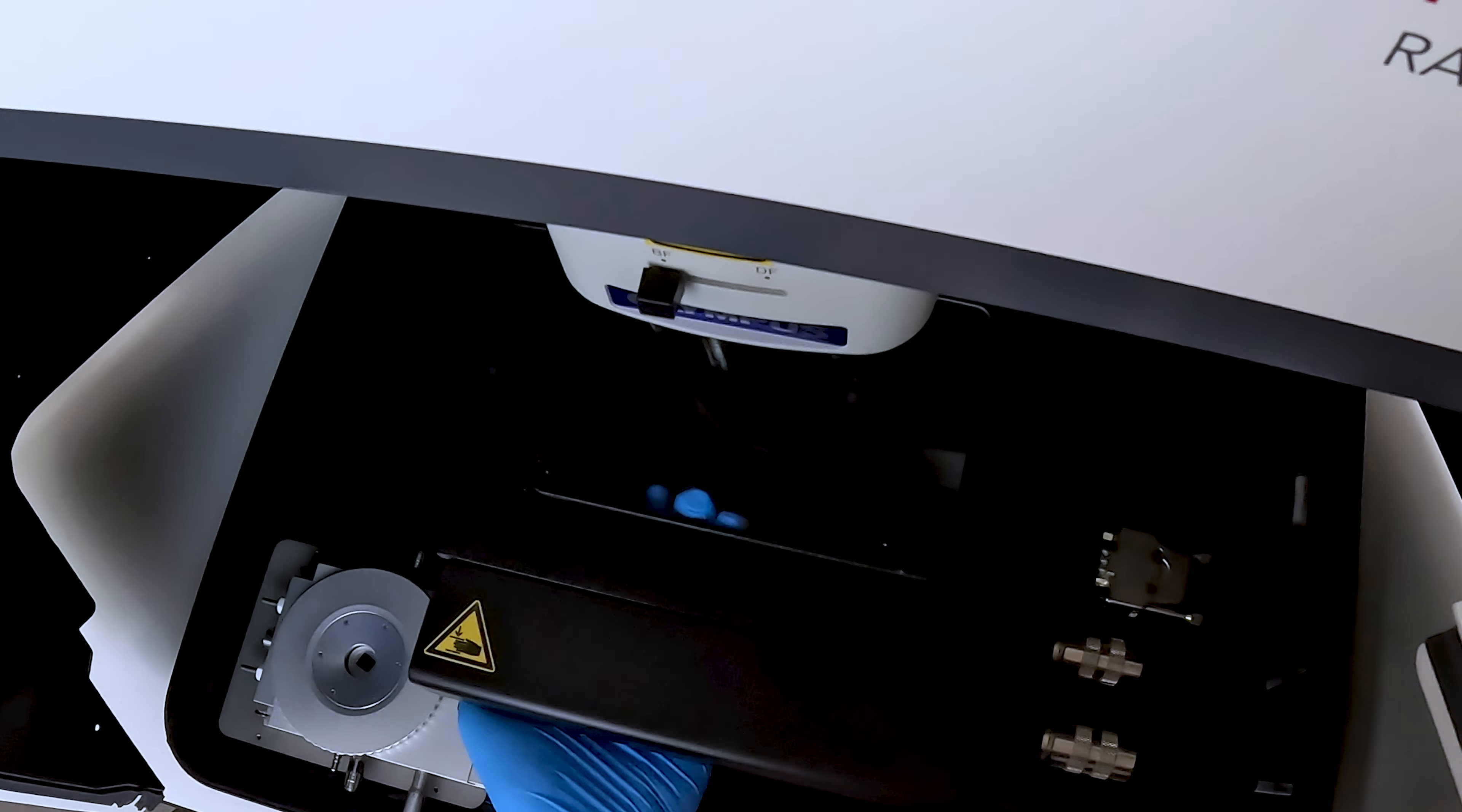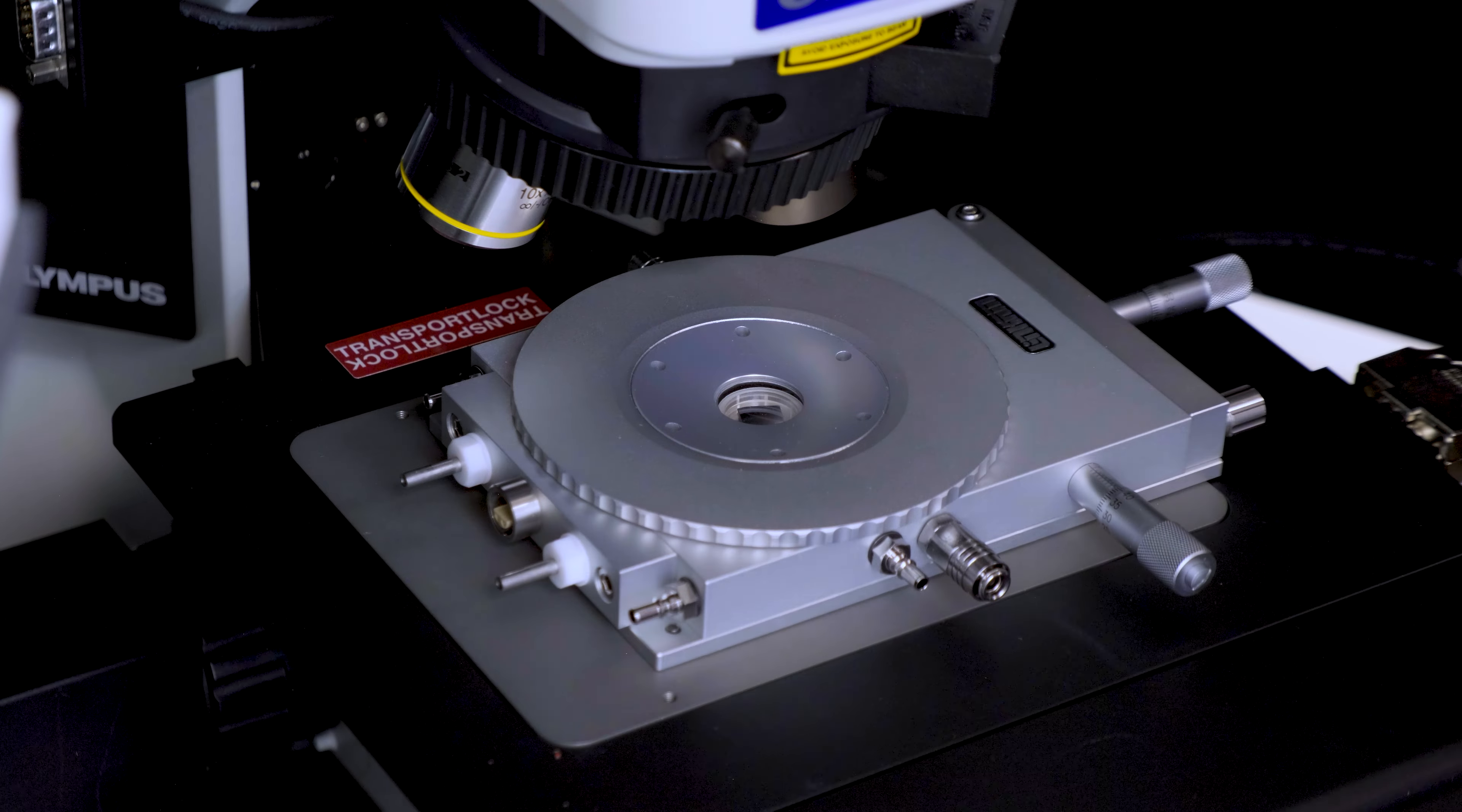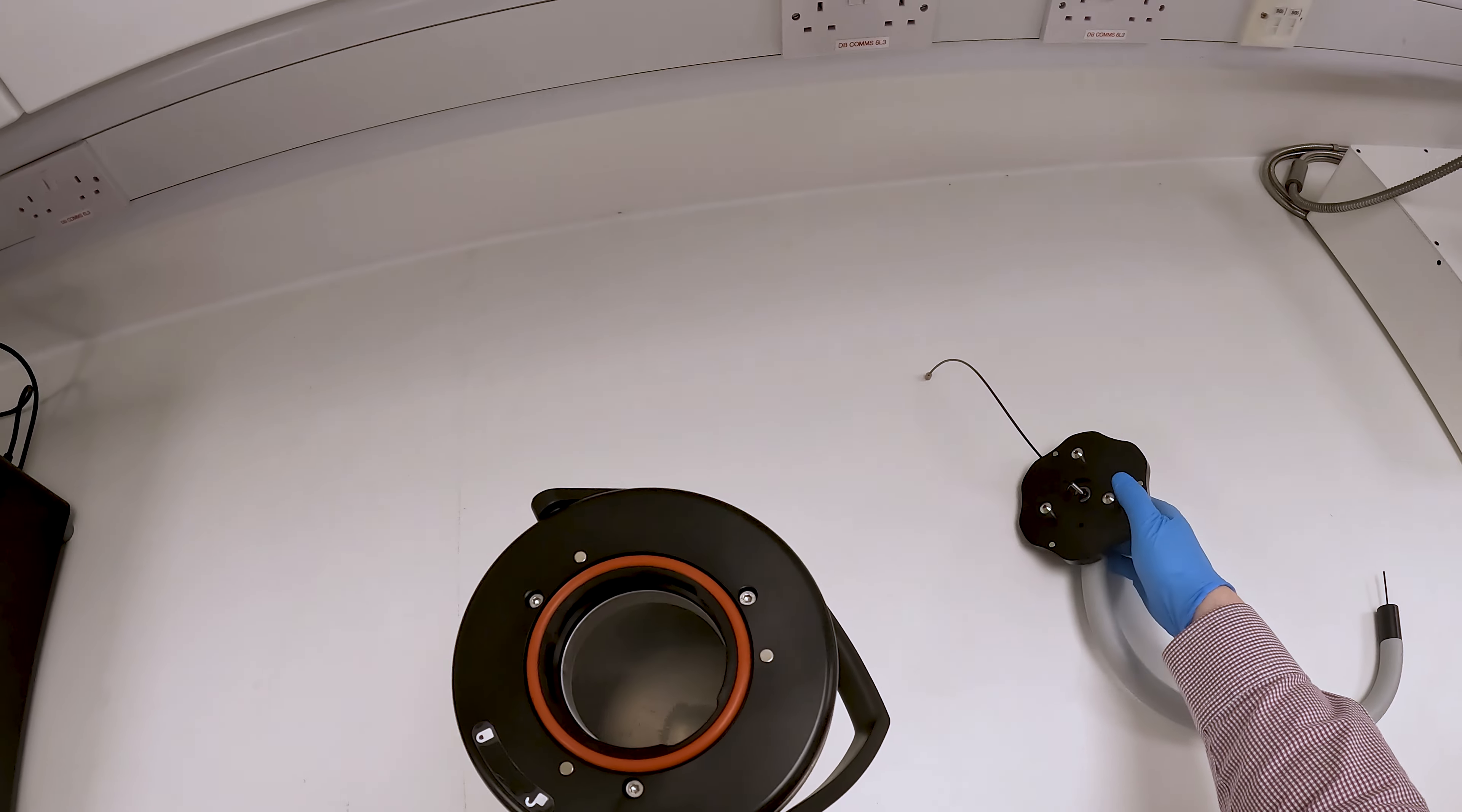The standard mount for the RM5 can just be lifted off. Next, fill the liquid nitrogen dewar flask with liquid nitrogen. Close the lid and ensure it is locked.